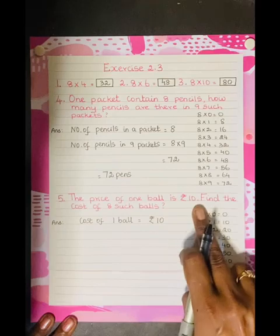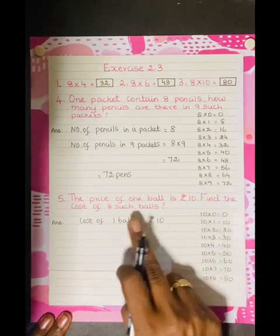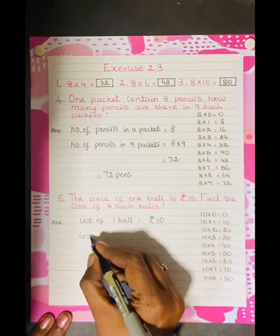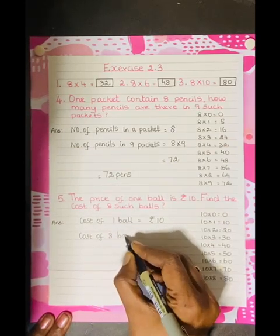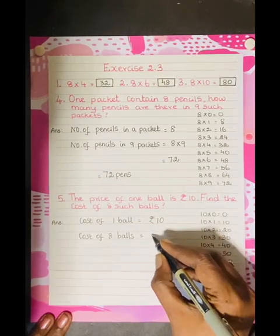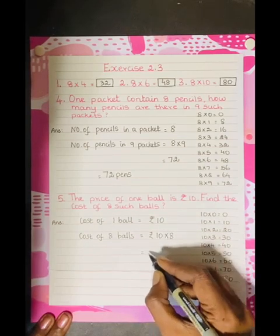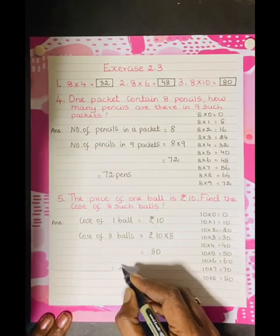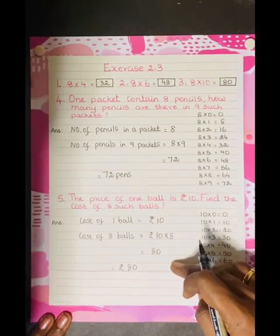So, the price of cost is correct. Cost of 1 ball. Next, how many balls are? Cost of, find the cost of 8 such balls. So, you have to write cost of 8 balls. Cost of 8 balls is Rs. 10 into 8 is equal to 80. So, is equal to Rs. 80. So, you know how to write the statement. Cost of 8 balls. Thank you.